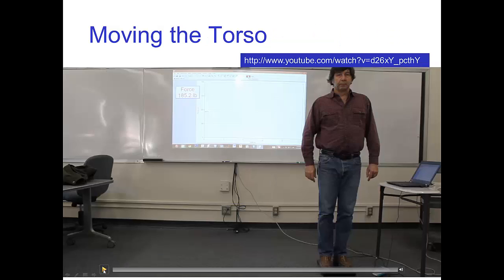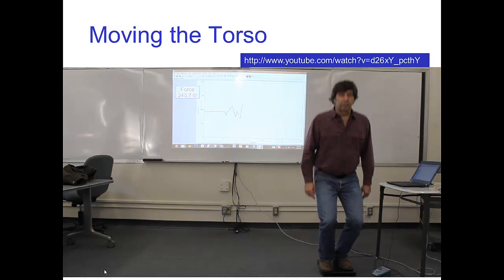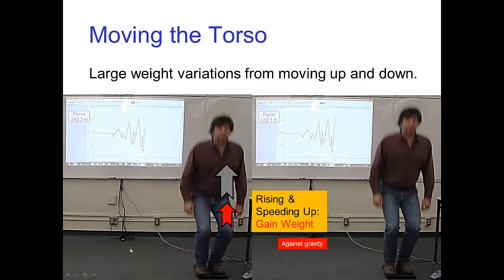In the first clip, I'm just moving my torso up and down. If you watch carefully, here I am rising and speeding up — and if you look at the graph, my weight is already larger than my normal weight of about 180 pounds. Rising and speeding up, I'm up to 242 pounds, and as I'm speeding up even more, my weight rises to an impressive 322 pounds.